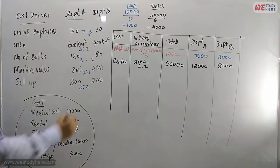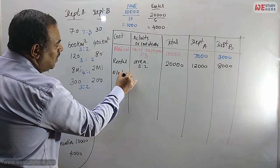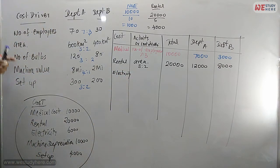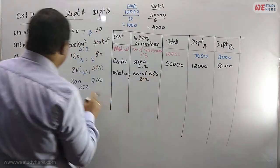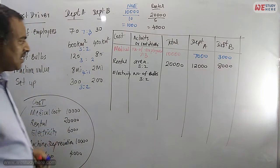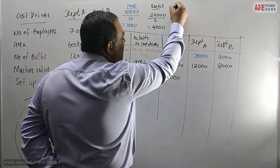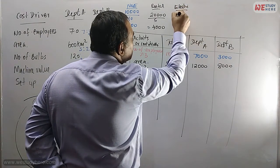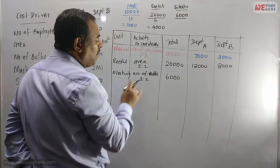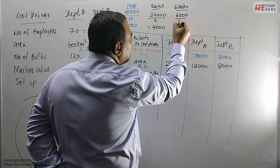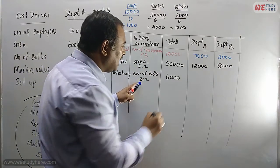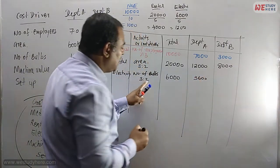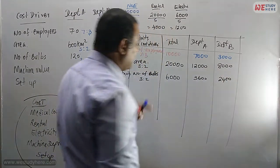Next is electricity. For electricity, we could use area, but we have number of bulbs, so it's better to use number of bulbs. The ratio is 3 is to 2. Electricity total is 6,000. Divide 6,000 by 5: that gives 1,200 per portion. Department A: 3 × 1,200 = 3,600. Department B: 2 × 1,200 = 2,400.